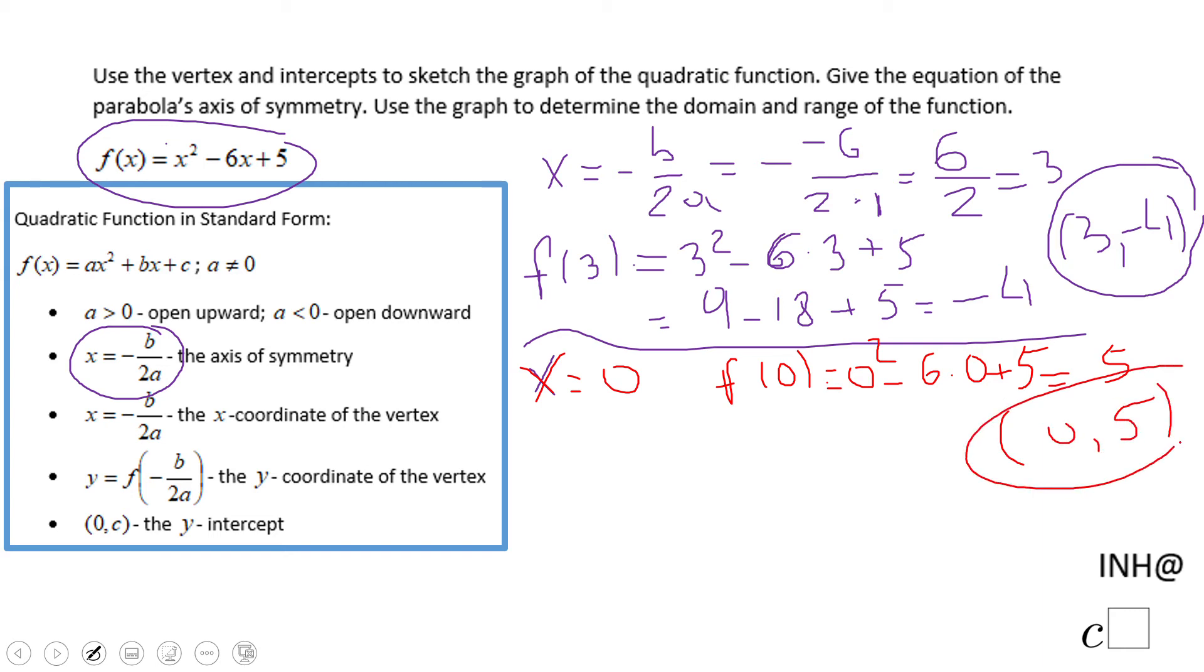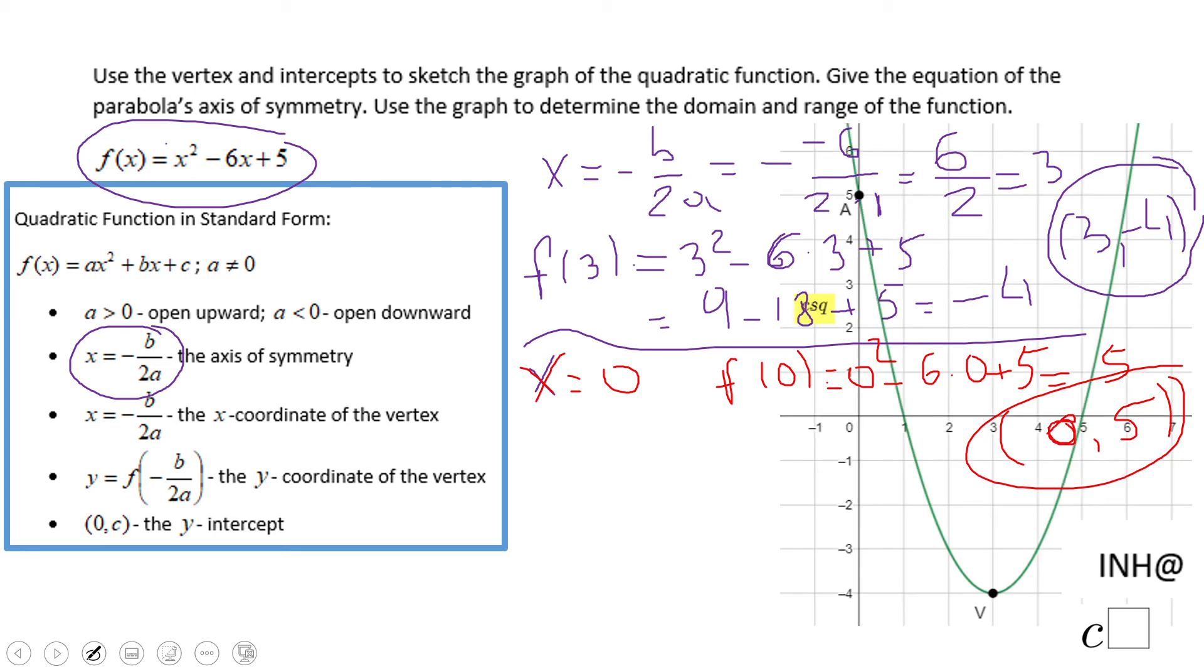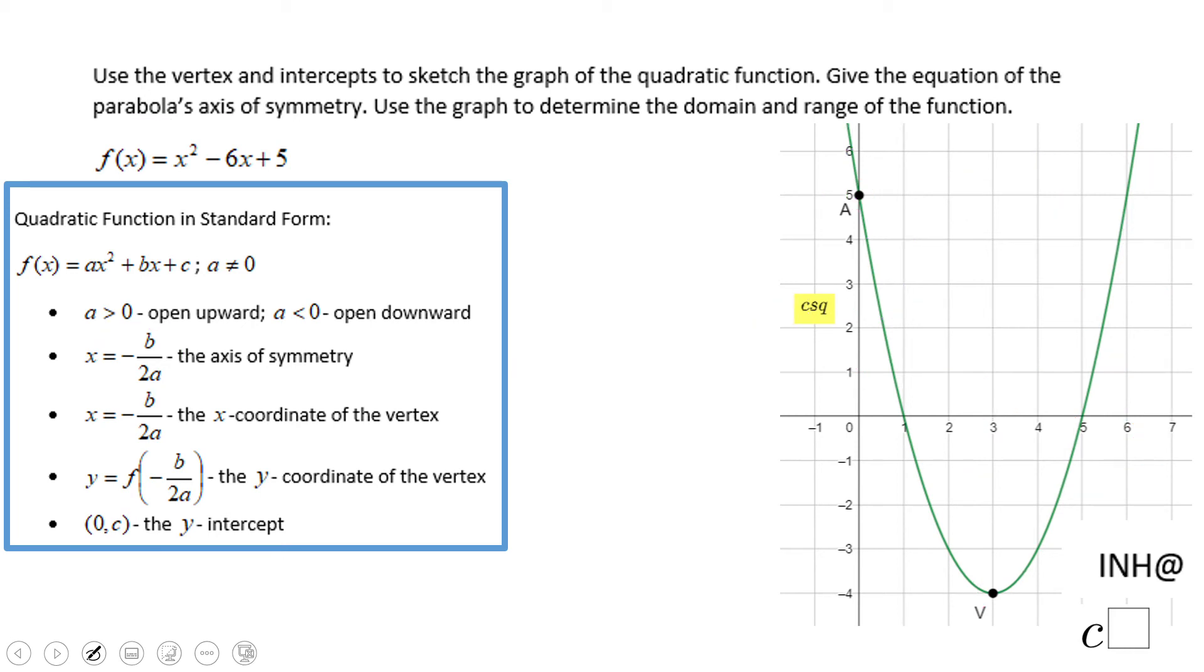Having these two points, the y-intercept 0 and 5, and 3 and negative 4, we can get a nice graph. You see it right here. This is the vertex, 3 and negative 4, and this is the y-intercept. And obviously this is the axis of symmetry, so you can graph a very accurate parabola.